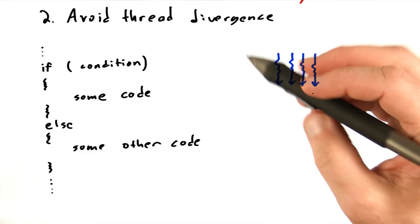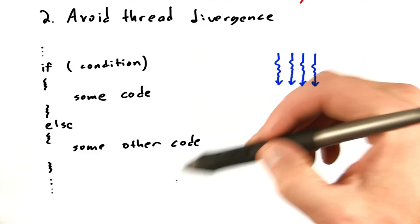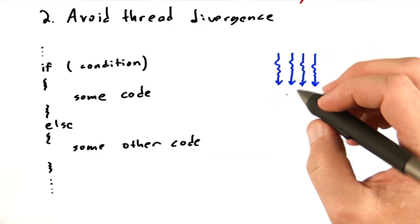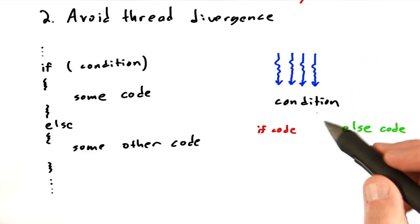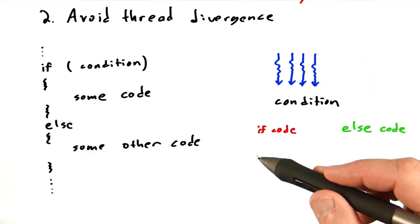If you think about a whole bunch of threads in a kernel executing this code, all these threads are going to get down here. These threads are going to hit this condition, they're all going to execute this condition, and then some of those threads are going to take the if branch, some of them are going to take the else branch.